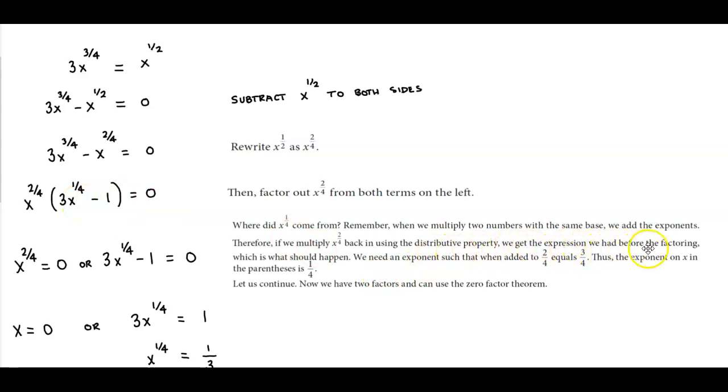we get the expression of what we had before the factoring, which is what should happen because x times x, add your exponents 2 fourths plus 1 fourths gives you 3 fourths. And then when we factor out the x to the 2 fourths we have 1 remaining.